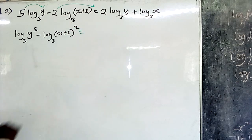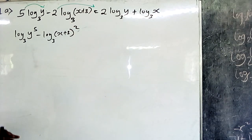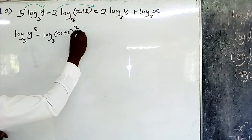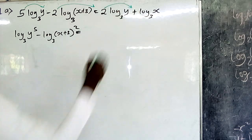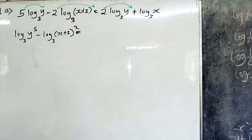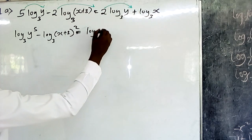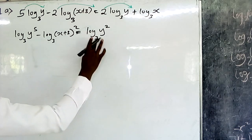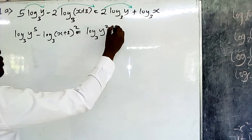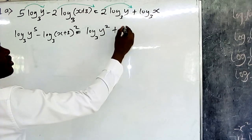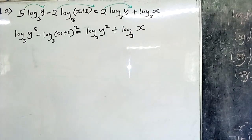This equals to: the coefficient becomes the power, that is log₃(y²). Then there is no coefficient on the last term, so we have log₃(x).